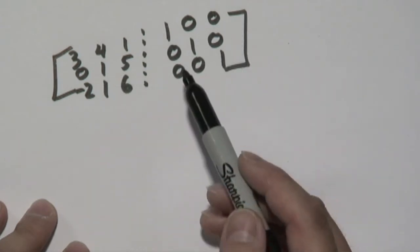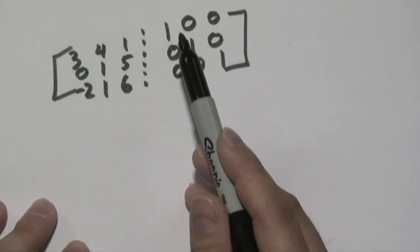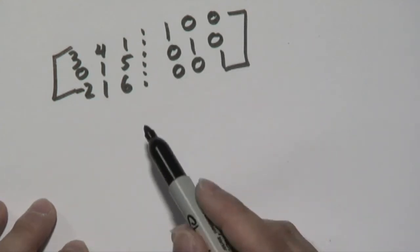If it was a 2 by 2, it'd be the same thing. You have 1, 1, 0, 0, but since this is a 3 by 3, you have to have 3 1s and 0s everywhere else.